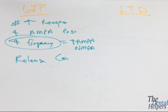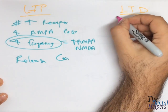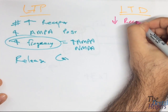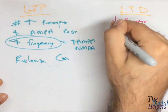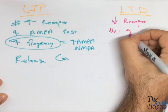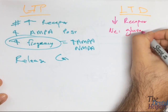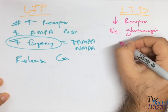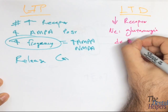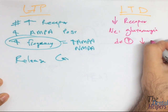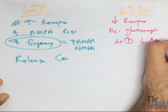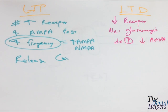Long-term depression is the exact opposite: we have decreased receptors. The neurotransmitter is glutamatergic, and there is dephosphorylation and downregulation of AMPA receptors. Importantly, LTD and LTP can occur in the same neuron in response to different rates of excitation.